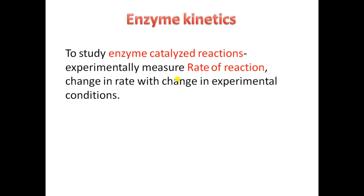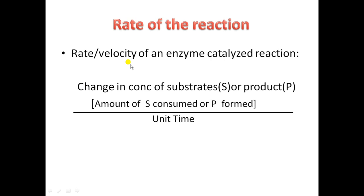Let us discuss how we can experimentally determine the rate of the reaction. As we know, in a reaction the substrate is getting converted into product — the substrate is being used up and the product is being formed. You can either find out the amount of substrate consumed or the product formed in a particular time. For example, if the rate of the reaction is 5 micromolar of product per minute, it means 5 micromolar concentration of product is formed per minute. Usually we find out the amount of product formed.